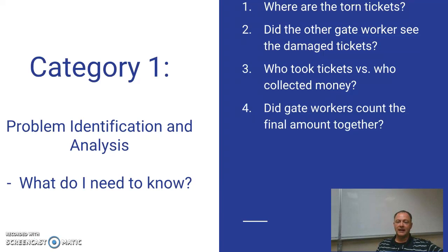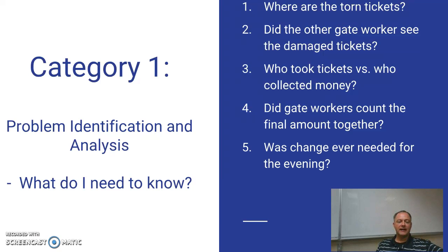Was the final total at the end of the night counted together? That way there could be a check and balance — is the amount we took in equal to the final amount? Another thing I need to know is whether change was ever needed that evening. It was a busy night, so it's possible that the $50 bill made its way from the gate to the change box as the gate needed change to get through the night.